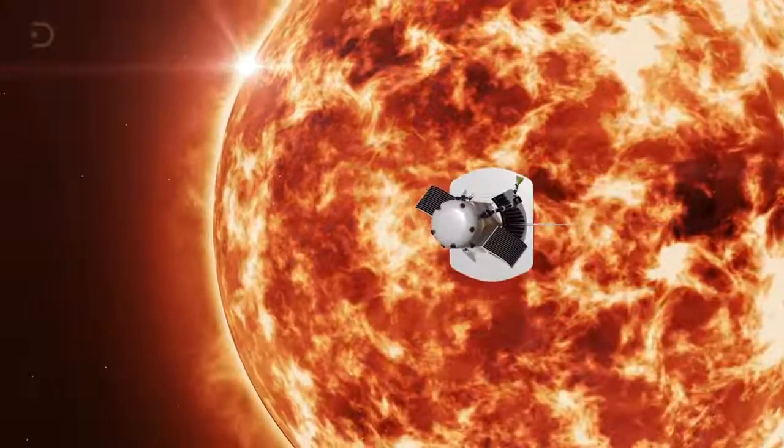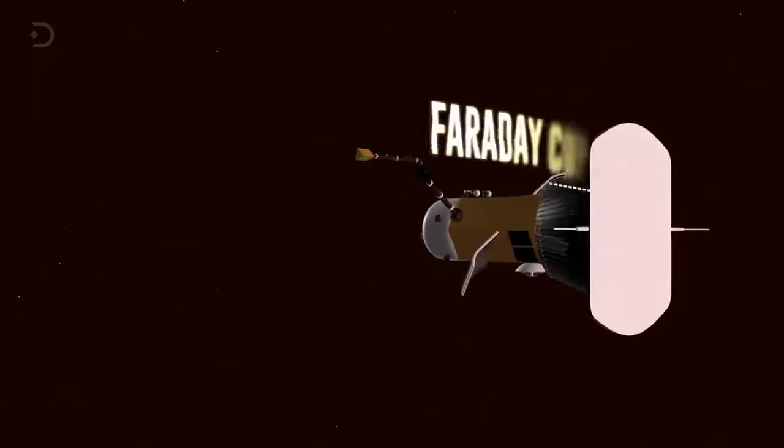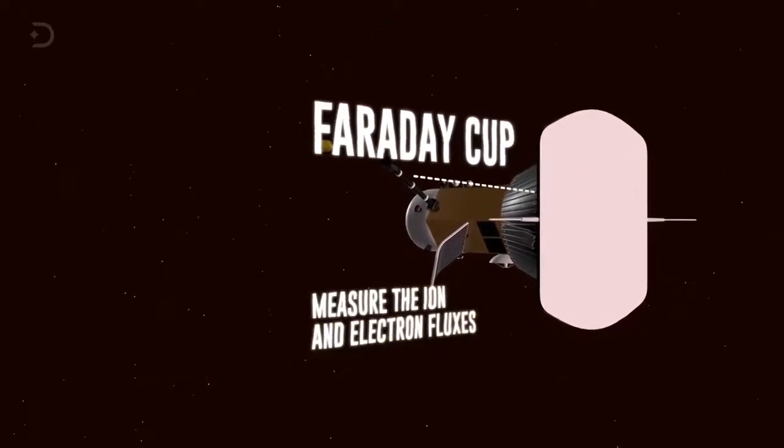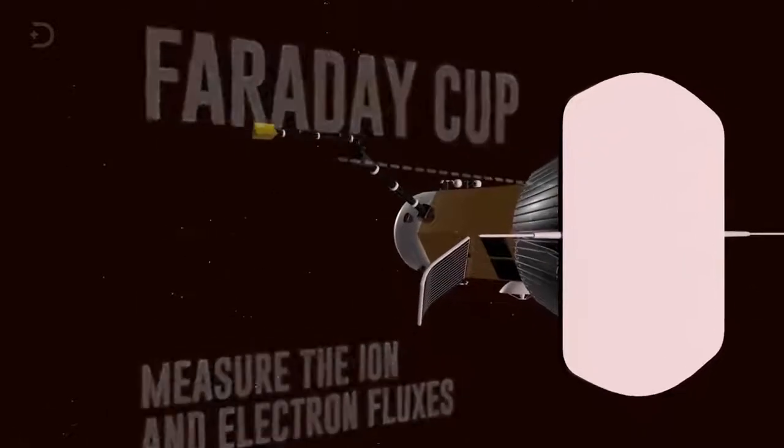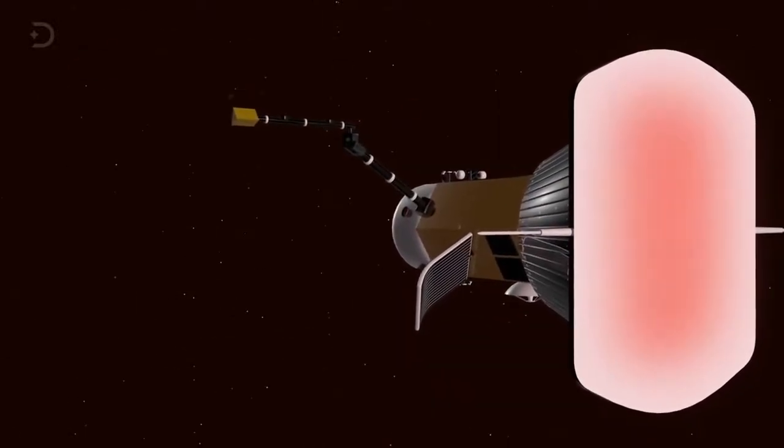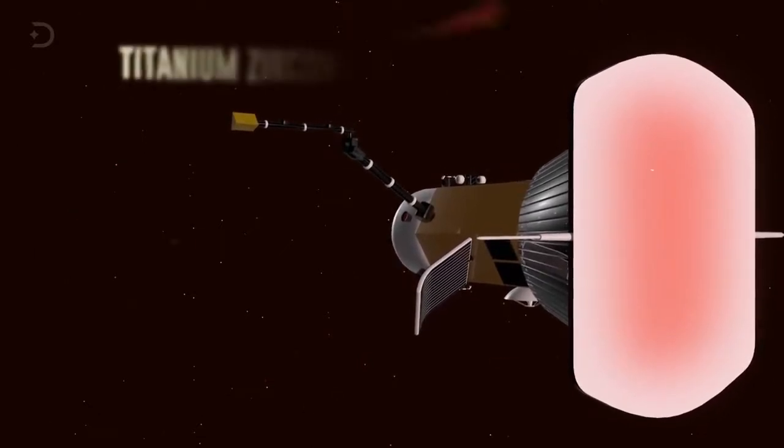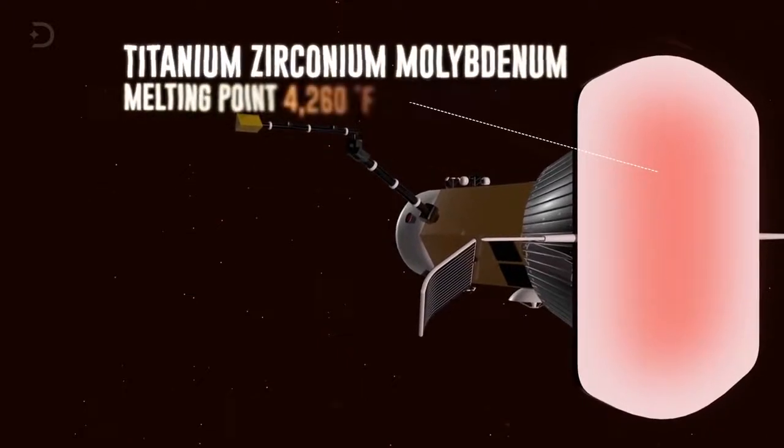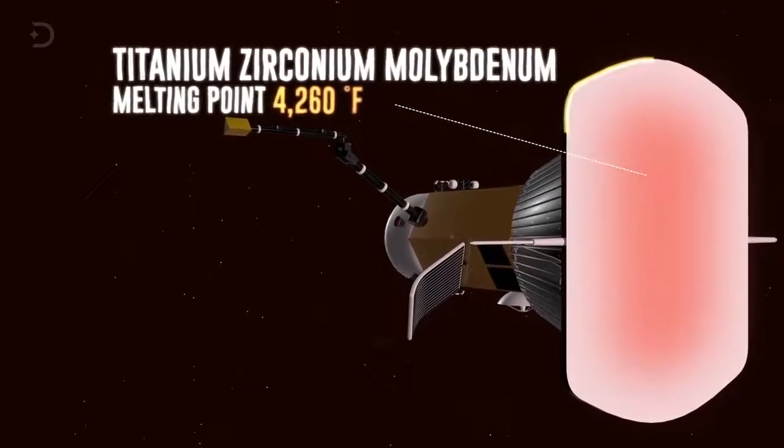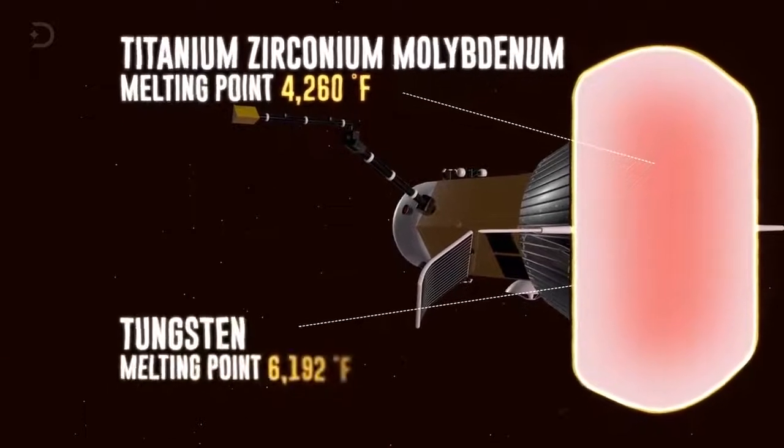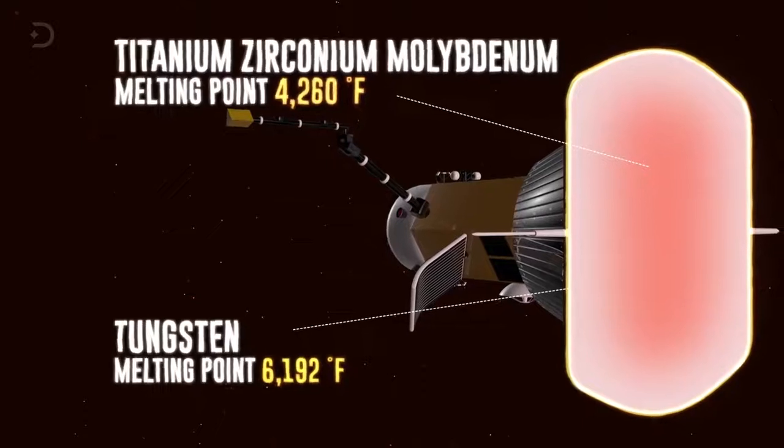But not all the instruments will be behind the TPS shield, and one of those is the Solar Probe Cup, or Faraday Cup, which is a sensor that is designed to measure the ion and electron fluxes, and flow angles from solar wind. Unique and cutting-edge technologies were needed to create this thing, so it wouldn't melt. It uses sheets of titanium, zirconium, molybdenum, with a melting point of about 4,260 degrees Fahrenheit. The grids producing the electric field are made of tungsten that has a melting point of 6,192 degrees Fahrenheit.